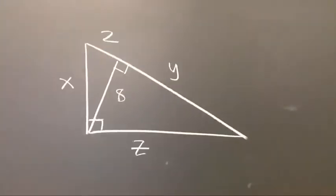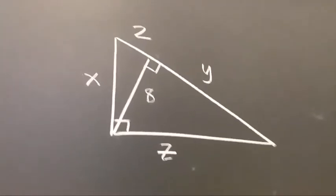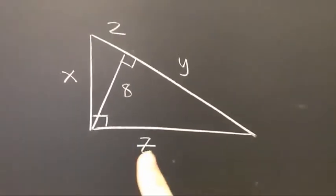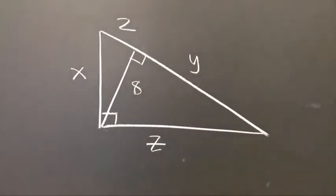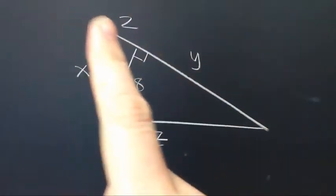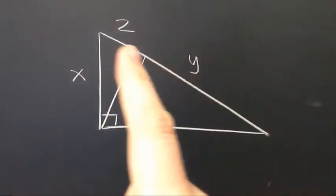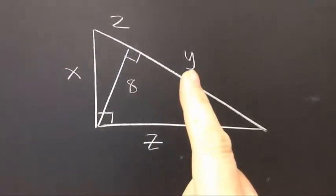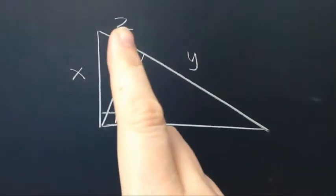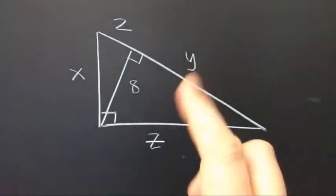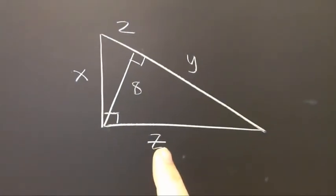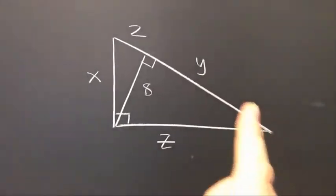Now it's time to find z. Z is the geometric mean of y and the entire hypotenuse, 2 plus y. 32 plus 2 is still 34. So z is the geometric mean of 32 times 34.